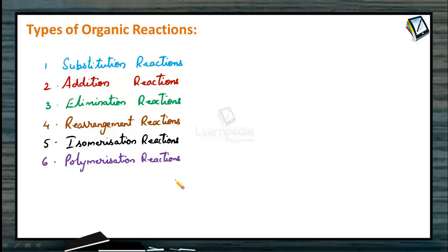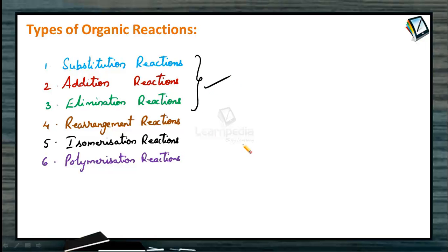Even though we have so many different types of organic reactions, we majorly discuss substitution reactions, addition reactions, and elimination reactions at various levels of organic chemistry.